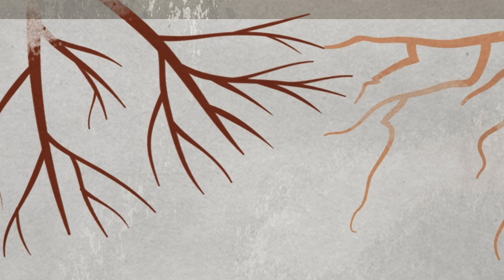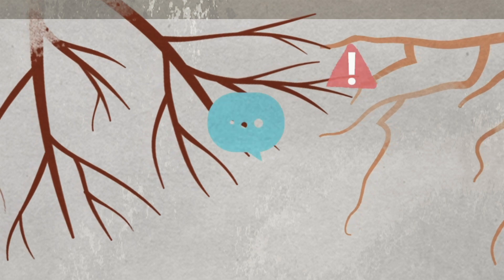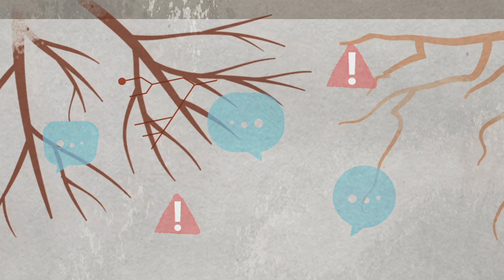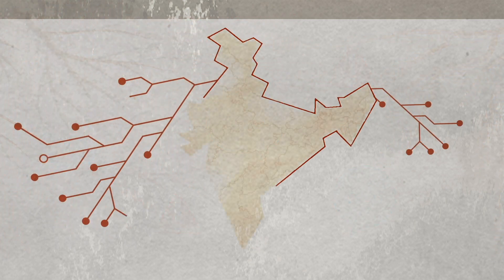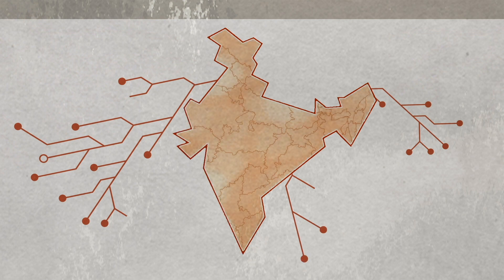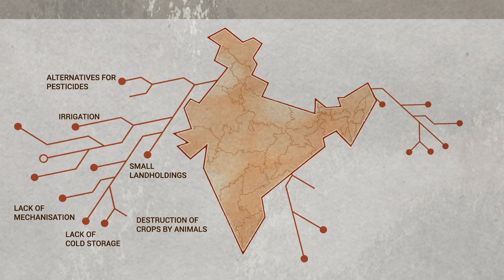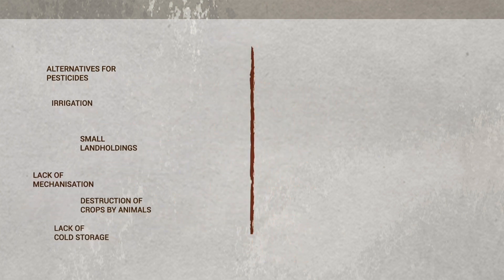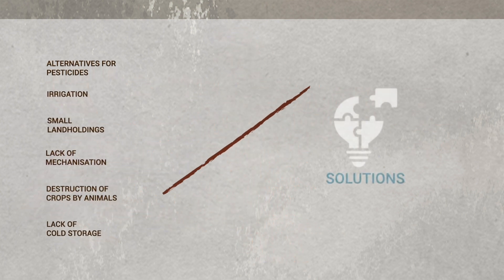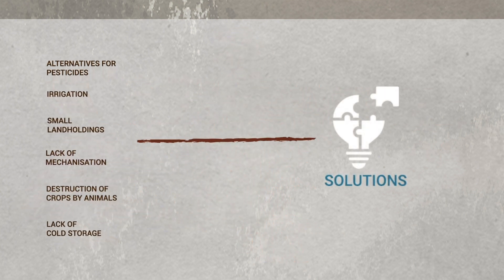They create a whole network of knowledge systems. We need to create a similar network when it comes to finding solutions to India's most pressing agricultural issues, so that instead of remaining isolated, problems can find solutions.